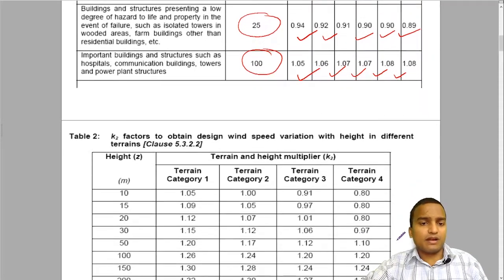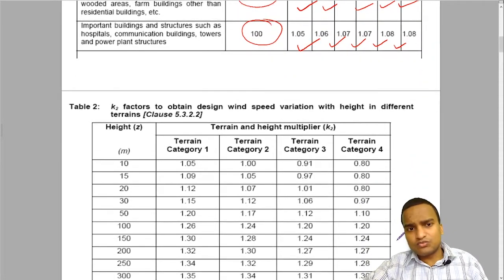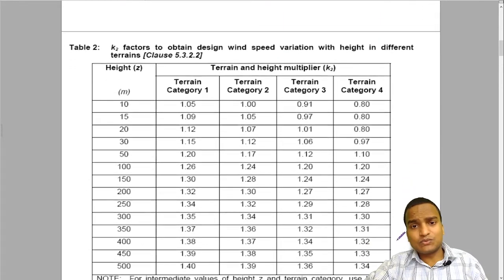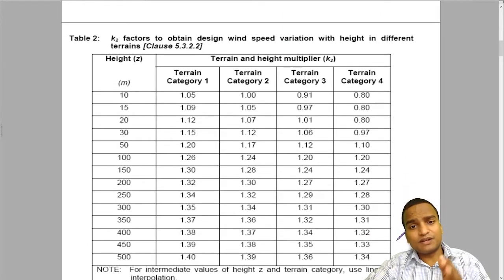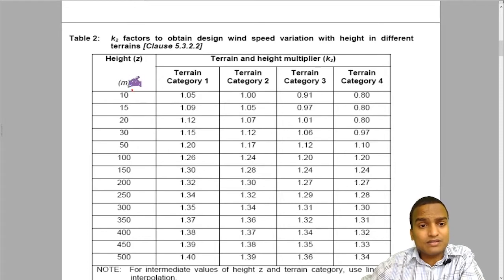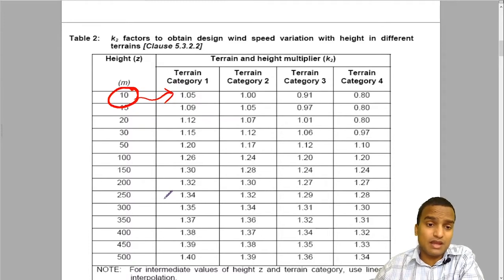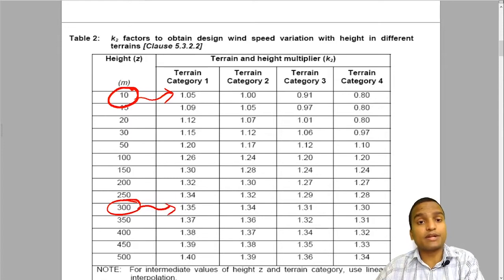Next comes the K2 factor, which is also very easy to understand. K2 is the terrain factor for different terrains. Terrains are of category 1, terrain category 2, terrain category 3, terrain category 4. K2 depends on the structure's height. If the height of a structure is 10 meter, then for terrain 1, the value of K2 is 1.05. If you go up to 300 meter height, the value of K2 will be high, 1.35 for the same terrain.